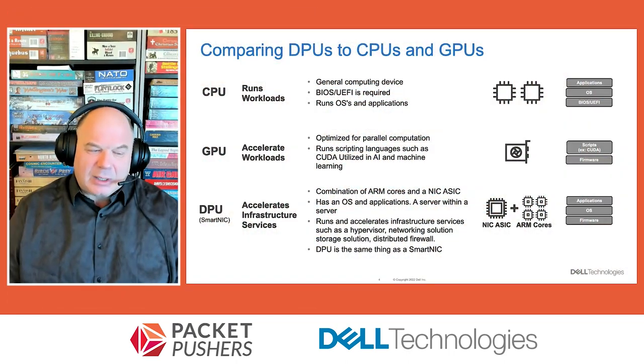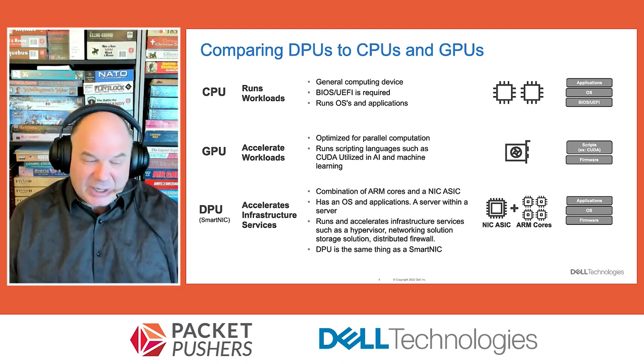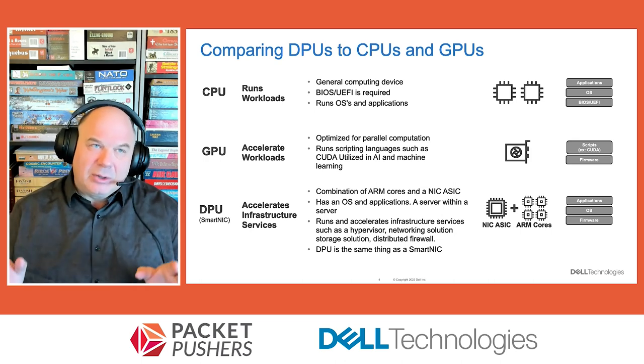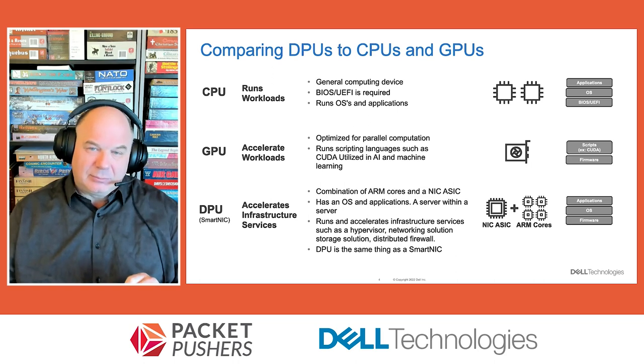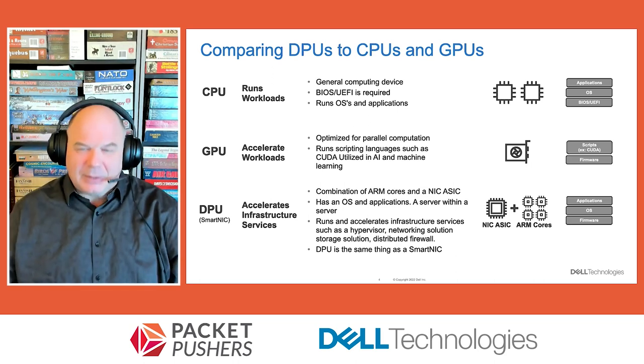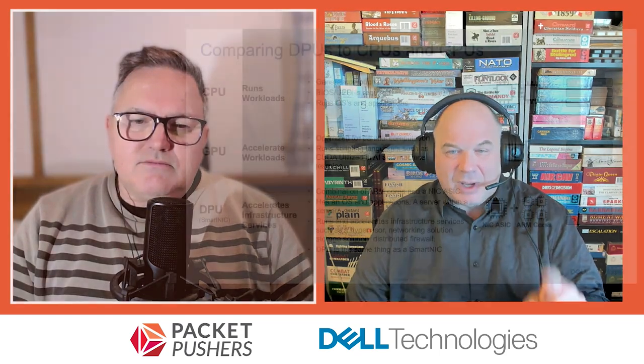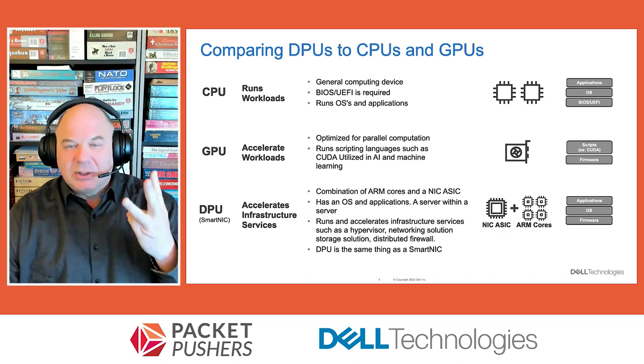A DPU is an evolution of ideas that have been around for 20 years in the industry, involving a combination of offload, acceleration, and isolation. The core point is that all of these together are now at sufficient density to be valuable. The ASICs are now dense enough to have offload components, programmable hardware, CPUs, and memory — that combination is the key inflection point.